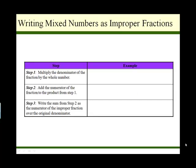Let's take a look at writing a mixed number as an improper fraction. We have three steps for this. First, we multiply the denominator of the fraction by the whole number. So as an example, we have 6 and 3 fourths as our mixed number. So we multiply the denominator and the whole number part. So that's 6 times 4, and that's 24.